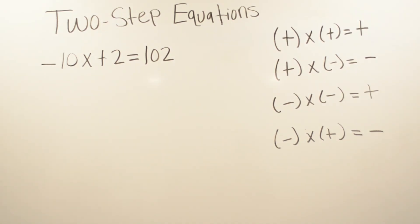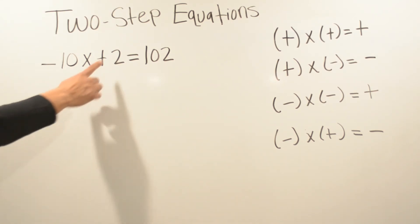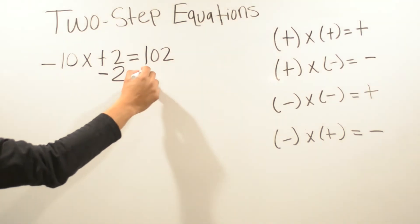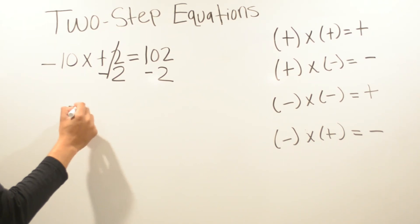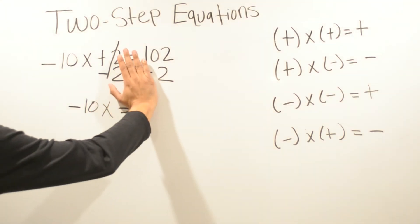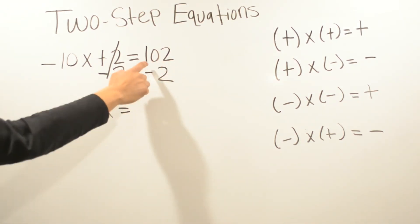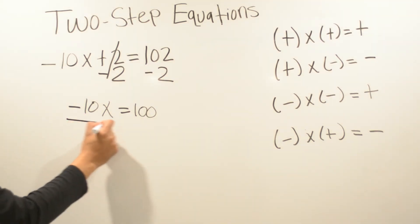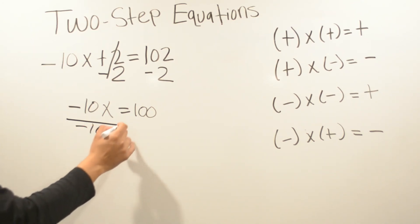This problem we have negative 10x plus two equals 102. We're going to get rid of this positive two first — the opposite of positive two is negative two. Whatever we do on one side of the equal sign, we make sure we do it on the other side. We cancel this, and we're left with negative 10x. We have two different signs so we're going to subtract: 102 minus 2 is going to be 100. Negative 10x is multiplying, so the opposite is division — we're going to divide by negative 10 on both sides.